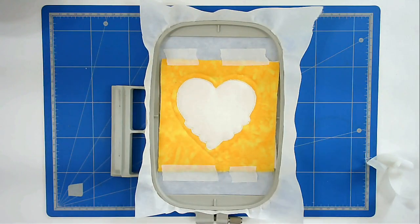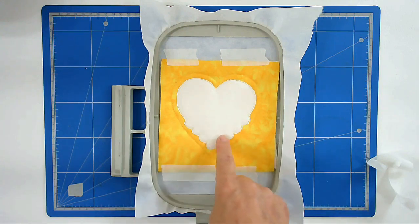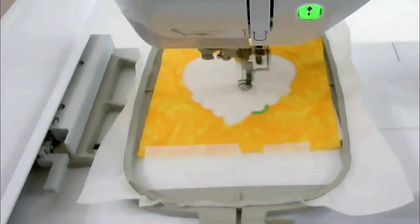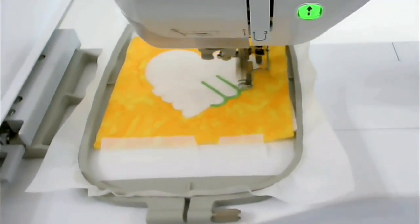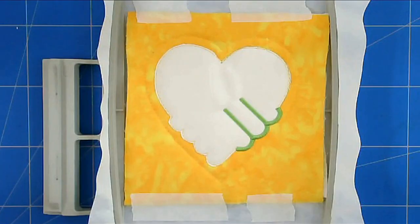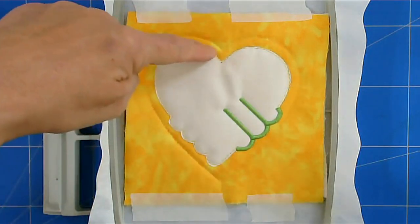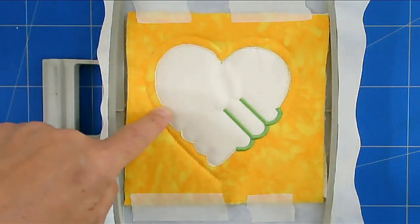Next I'm going to change my thread to green and I'm going to pop this back into my machine and stitch round number four and that's going to do around the finger area here. I've changed my thread to red and next I'm going to stitch round number five and that's going to do the satin stitch around the top of the heart here.